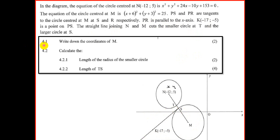We're going to question 4.1: write down the coordinates of M. Looking at the equation, for (x + 6)², to find the x-value of the center, change the plus 6 to minus 6. And for (y + 3)², change your sign to get minus 3. So from the equation, change your sign: M is (−6, −3).